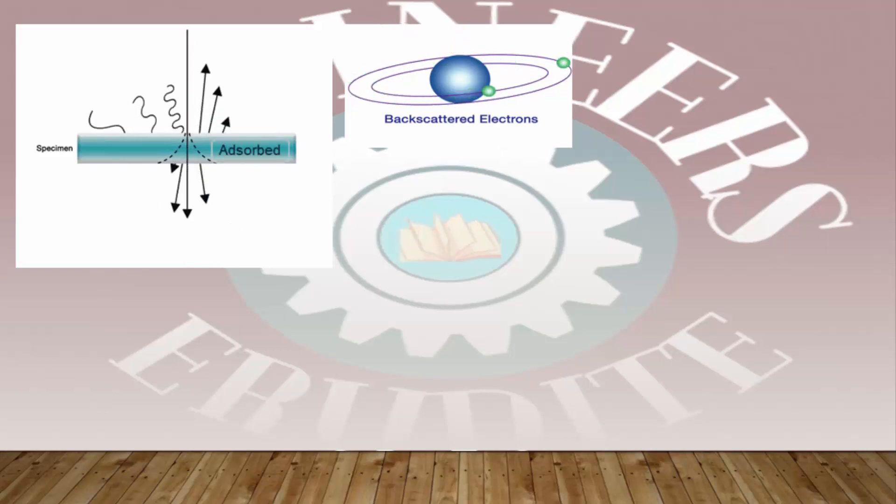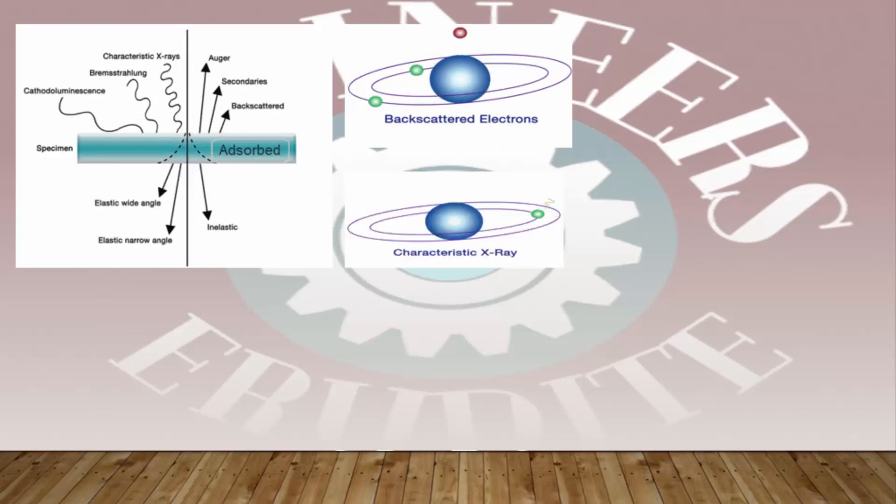Characteristic x-rays are produced when the electrons in the higher energy level transit to lower energy level shell to maintain the balance. It will generate some energy in the form of x-rays.